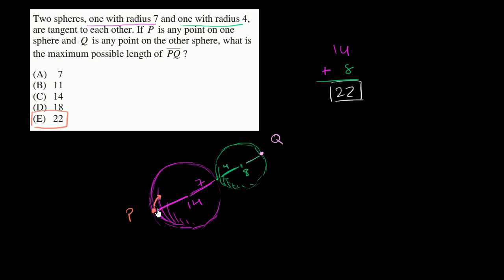But the fact that you can definitely get these points to be 22 away from each other, and that is the largest of all the choices, that's a pretty good clue that that is the maximum possible length of PQ. In a future video, I could do a more in-depth proof that this is actually going to be the case.